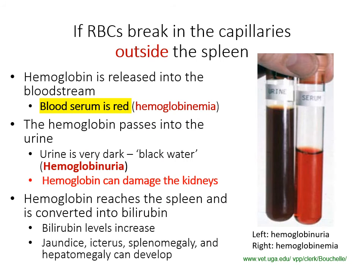If red blood cells break in the capillaries outside of the spleen, it causes a different situation. The hemoglobin released from those red blood cells is released directly into the bloodstream. The blood serum becomes red instead of the normal yellow color, and because you have hemoglobin in the blood serum, this is referred to as hemoglobinemia.